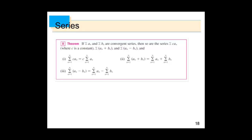The sum of c·a_n from 1 to infinity equals c times the sum of a_n. Similarly, the sum of (a_n + b_n) equals the sum of a_n plus the sum of b_n.